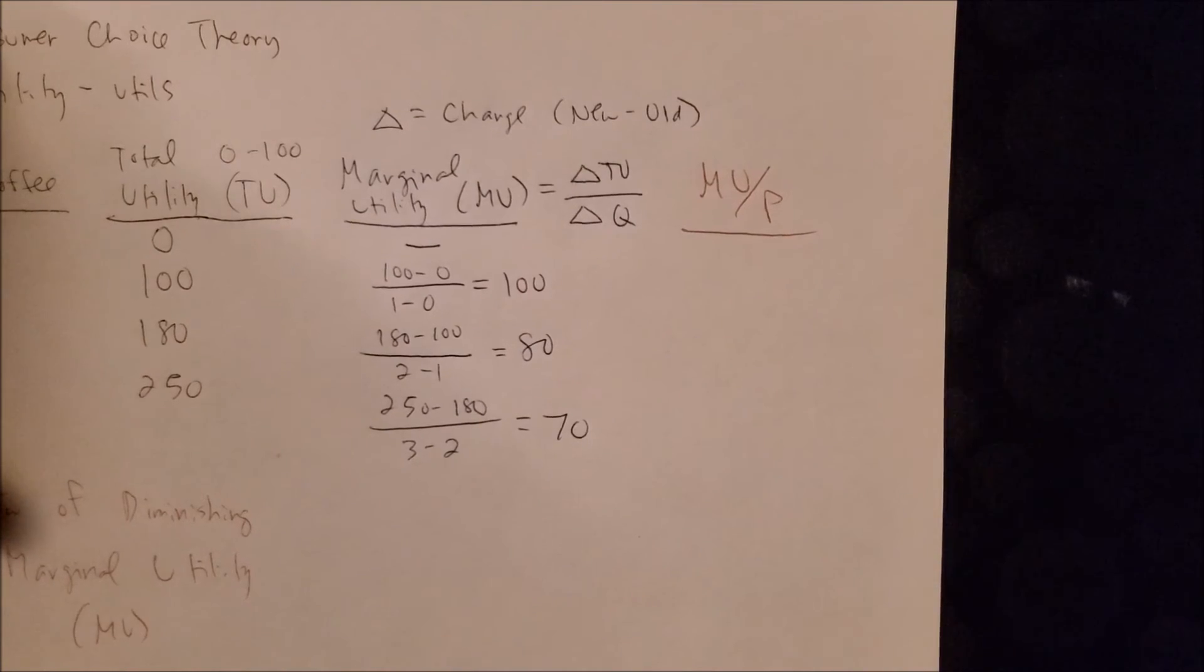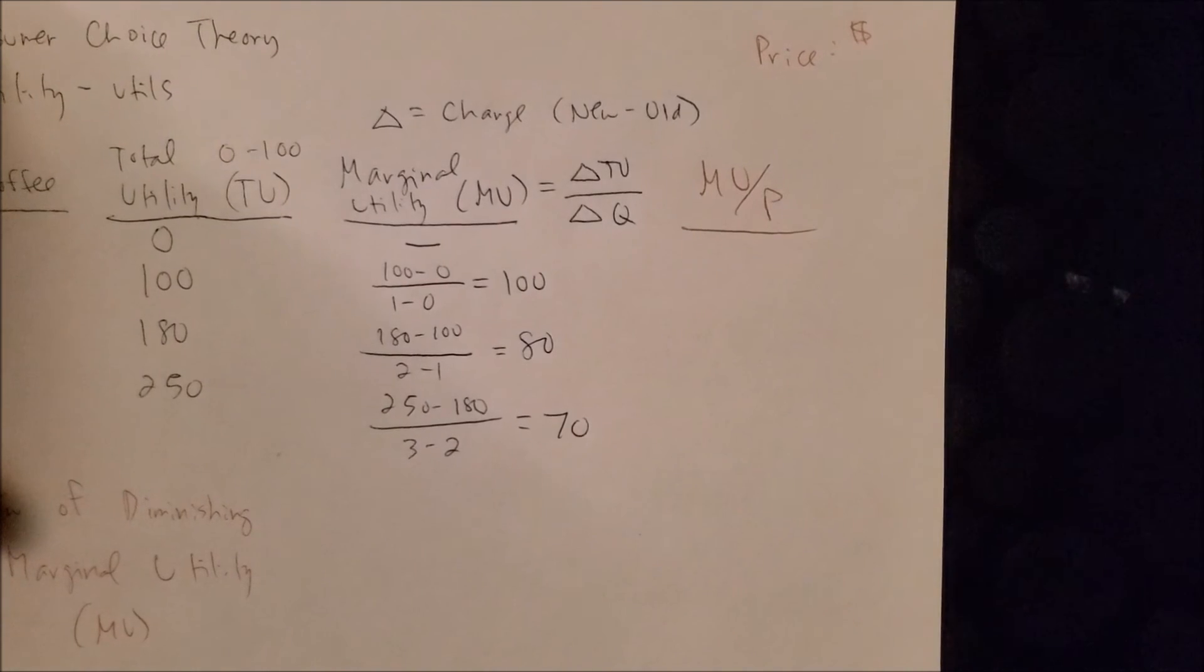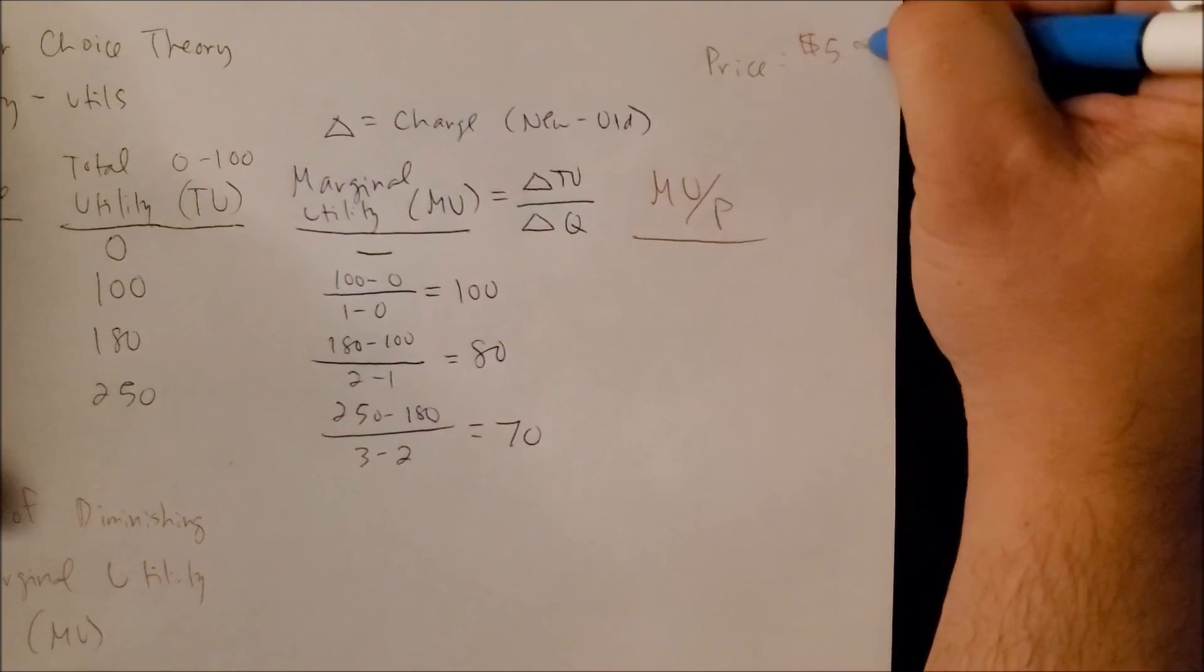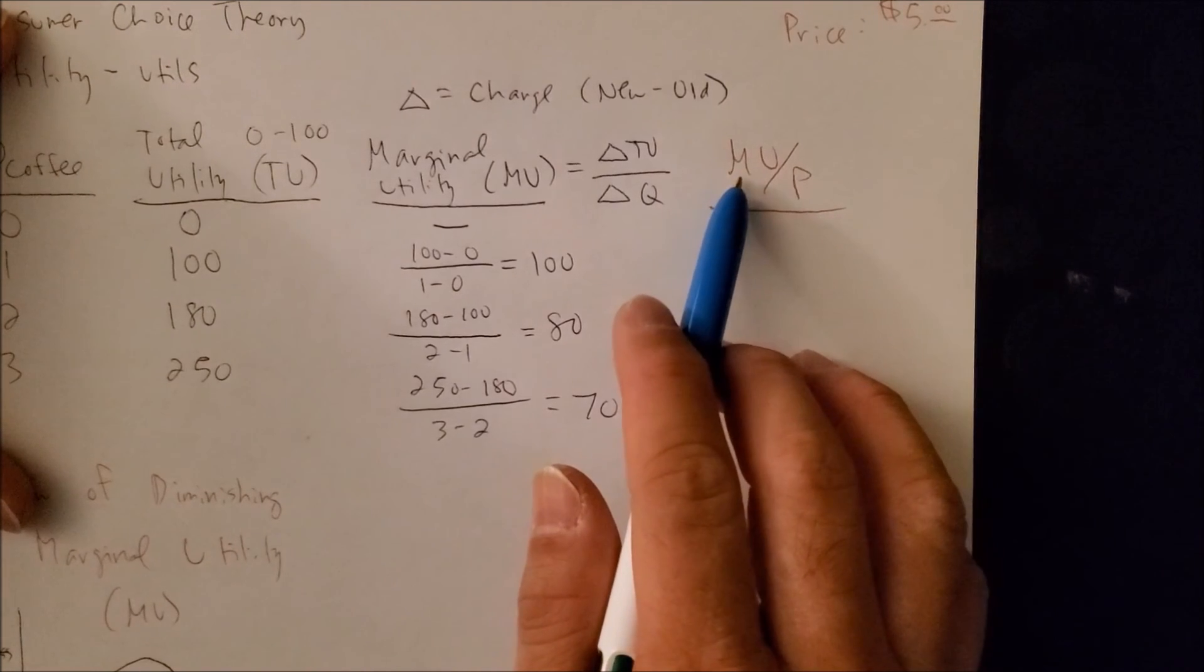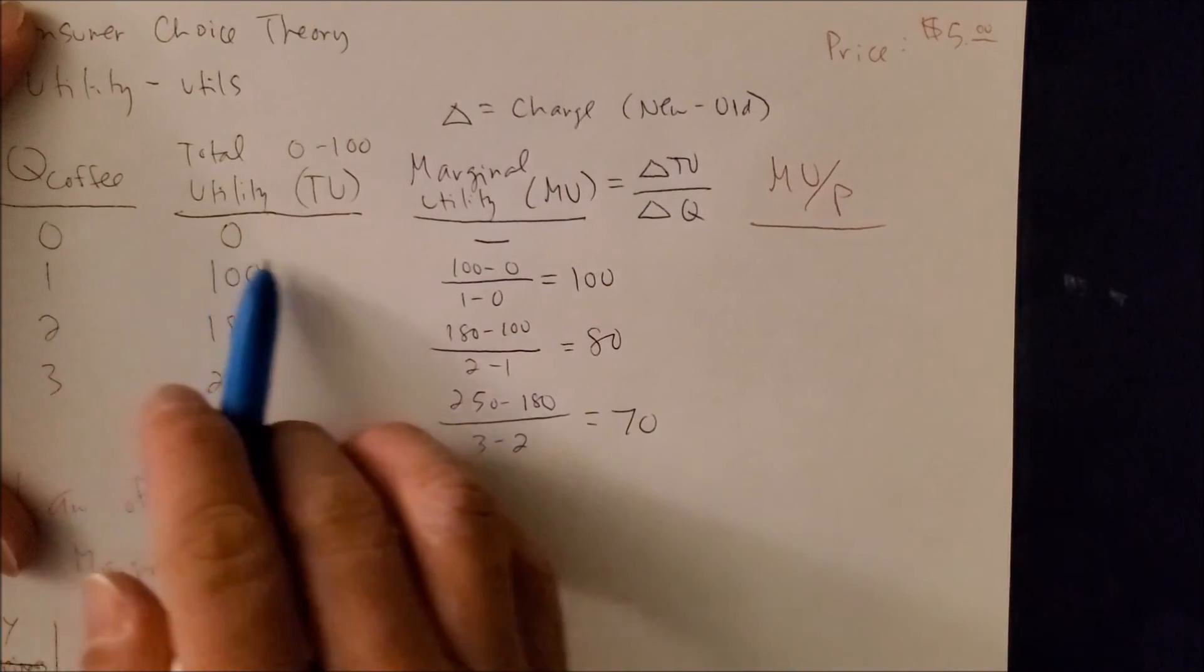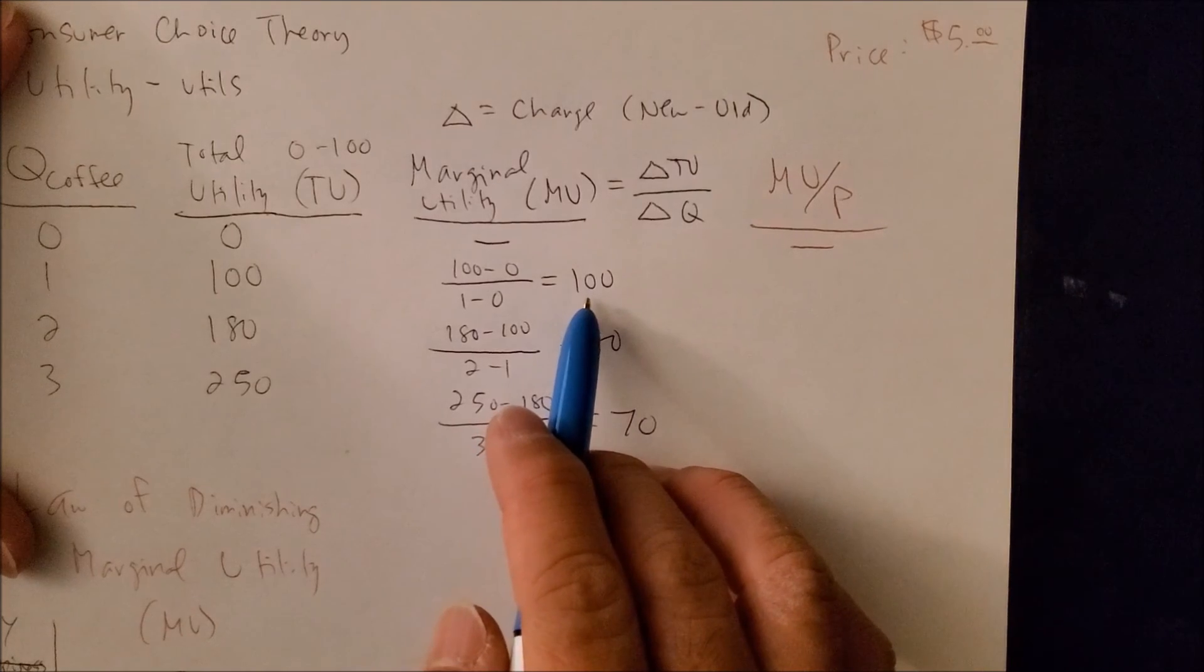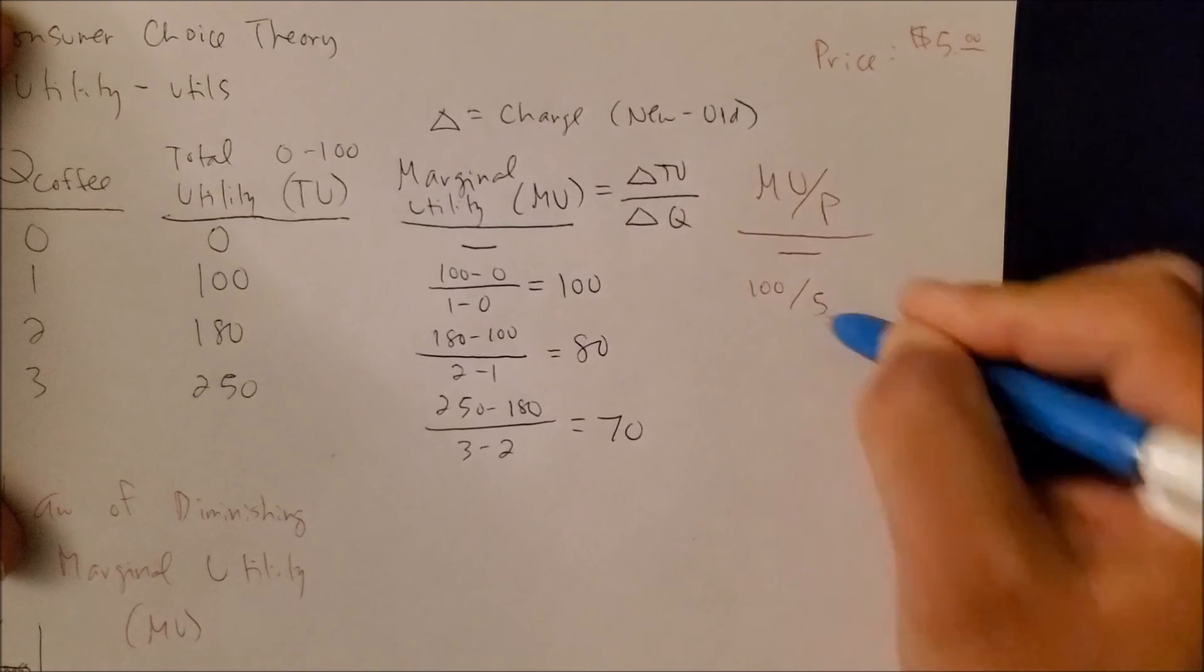MU over P, and price is usually given. Let's say the price of coffee, let's make this a latte, could be up to five dollars. And now we can see that we have what we need. We have MU and we have price. All we have to do now is simply plug it in. So at quantity zero there is nothing for MU, we can't solve for zero. But we can solve MU at one cup of coffee: it's going to be 100 over five dollars.